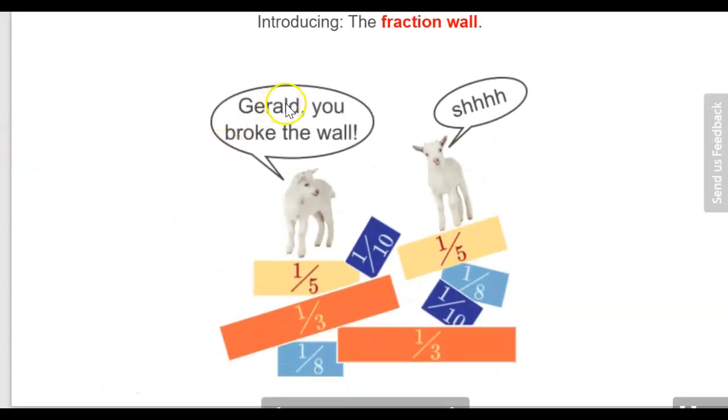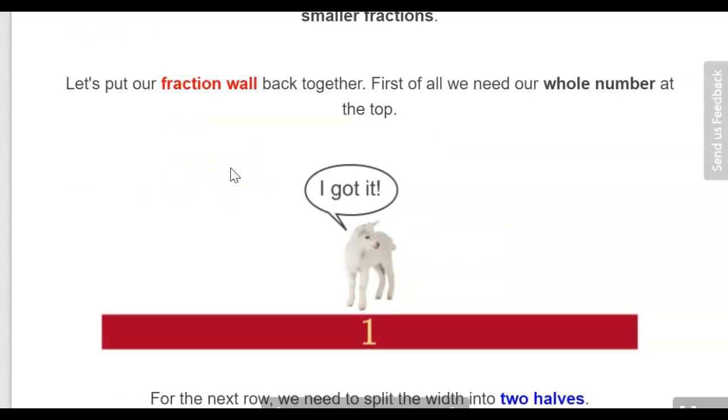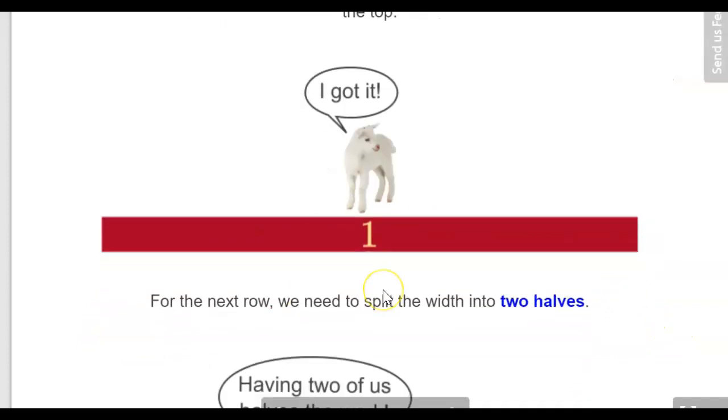Now the next thing we're going to look at is fraction walls. Here we have a couple of lambs and it seems as though Gerard has broken the fraction wall. Let's have a look at what a fraction wall actually is. When we're considering a fraction wall, we can start off by considering one piece at the top. Now we're going to have a row beneath this.